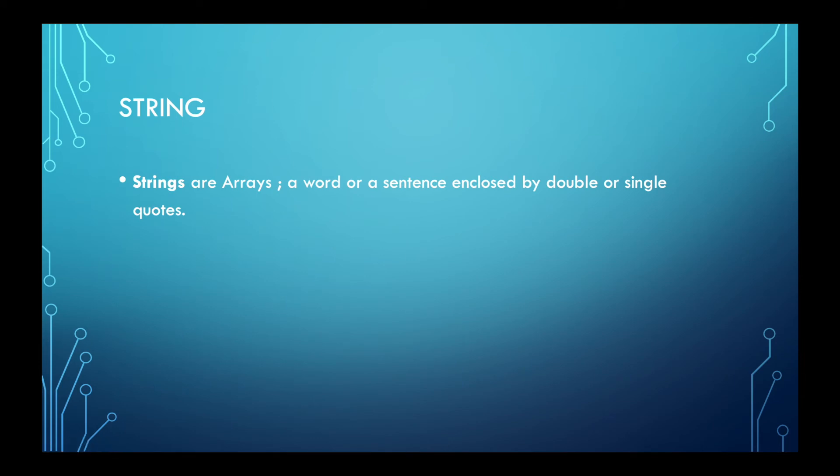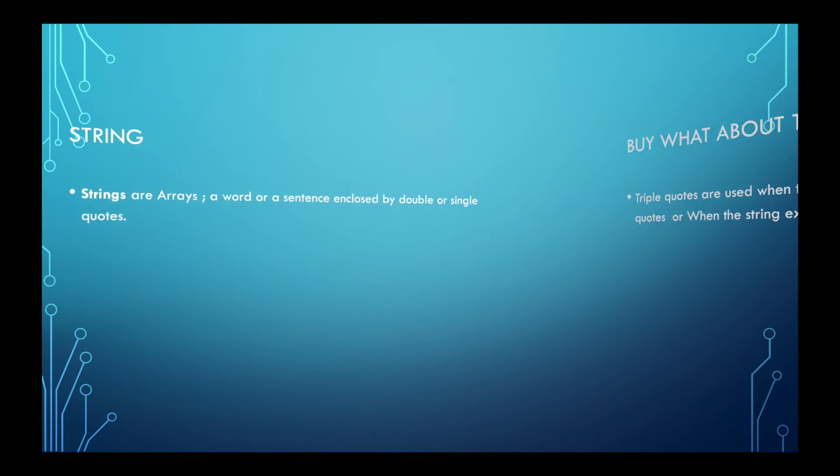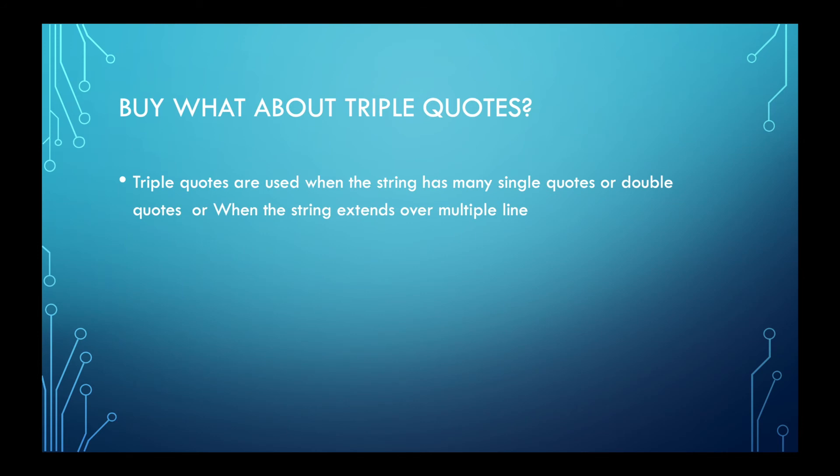Now we will be talking about strings. Strings are arrays. Easily, like, let's explain that. String is a word or a sentence. They are usually enclosed by double or single quotations. If you want to know more about double and single quotations and placeholder, then make sure to check out our last video where I showed you how to use double and single codes. I'll link that in the description box. But sometimes you would often find people using triple codes. And the reason is that when a string has many single codes or double codes, the string extends over a multiple line and triple code tool, you'll have to use them.